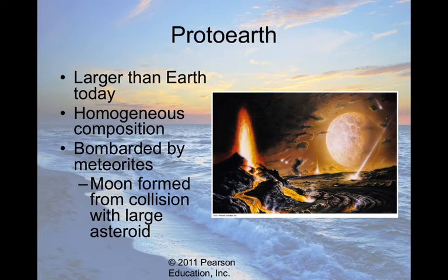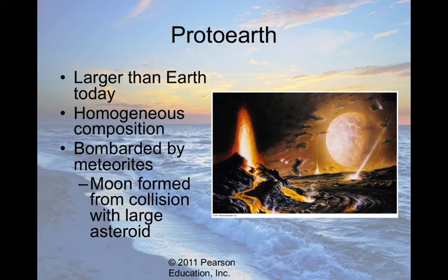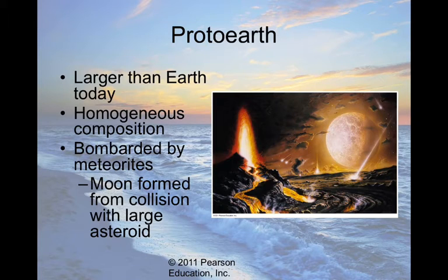"Proto" means first, so proto-Earth is the first Earth — it's actually a lot larger than today because the Earth is cooling, and as items cool they take up less mass. It was homogeneous, meaning from the surface to the center it had roughly the same composition. With dust and particles still flying around the solar system, the surface was bombarded by meteorites. It's believed the Moon formed when a very large asteroid struck proto-Earth and knocked a piece off. The Moon still has craters from this early bombardment period, while Earth doesn't — which gives rise to the notion of plate tectonics.